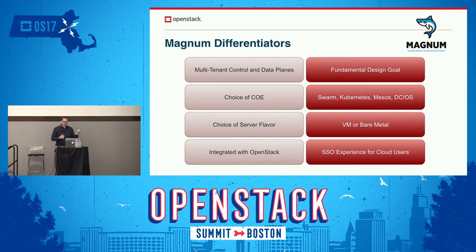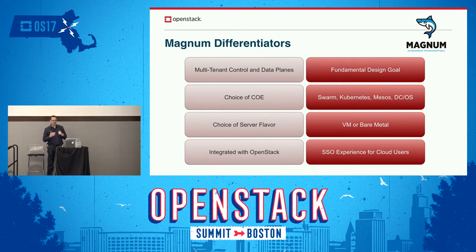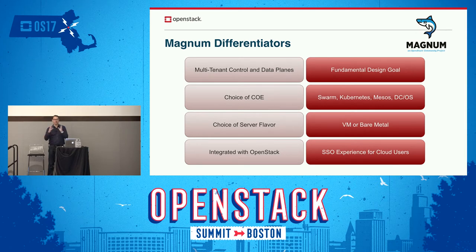The second difference is you get to choose the COE — there are drivers today for Swarm, Kubernetes, Mesos, and DCOS. The third difference is the choice of server flavor. Magnum is designed to work with Heat and Nova, and today it works with VMs as Nova instances. But it can also work with bare metal machines, so you can have containers running on bare metal.